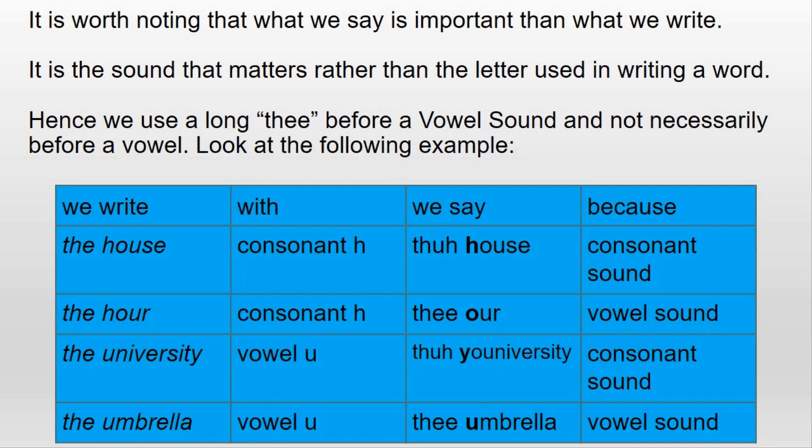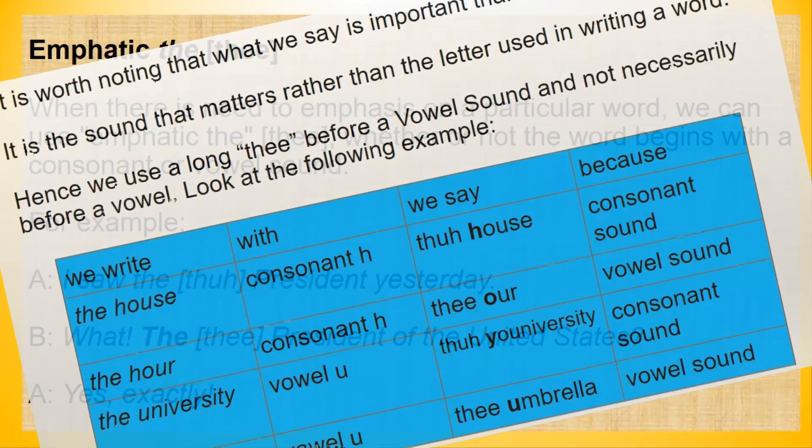We write 'the university' with vowel U, but we say 'thuh university' because of the consonant sound Y. We write 'the umbrella' with vowel U, and we say 'thee umbrella' because of the vowel sound U.